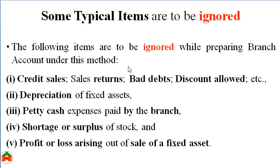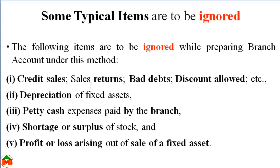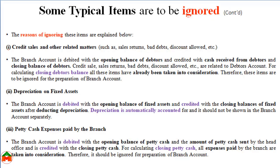For some items we don't provide any journal entries — those items are ignored while preparing the journal or the branch account. The ignored items are: credit sales, sales return, bad debts, discount allowed, depreciation of fixed assets, petty cash expenses paid by the branch, shortage or surplus of stock, and profit or loss arising out of sale of a fixed asset.